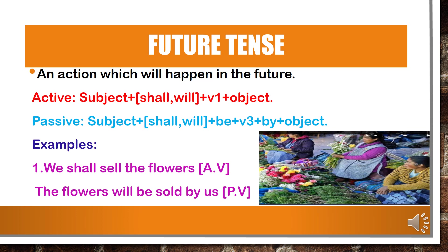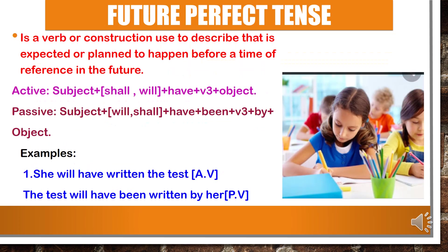Future tense is an action that will happen in the future. In active voice: subject plus shall/will plus V1 plus object. In passive voice: subject plus shall/will plus be plus V3 plus by plus object. Example — in active voice: 'We shall sell the cloth.' In passive voice: 'The cloth will be sold by us.' 'The cloth' is the object in active voice and now becomes the subject. 'Will' is the helping verb. 'Be' is written as it is. 'Sold' is the V3 form. 'We' changes to 'us' as the object in passive voice.